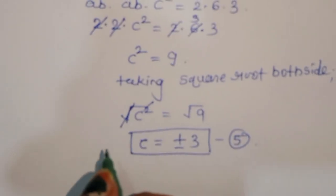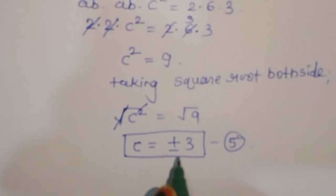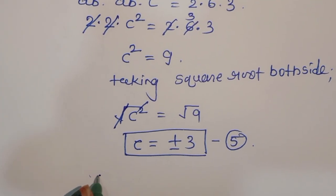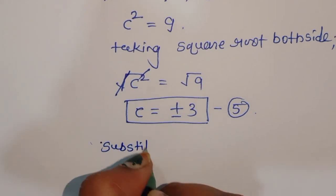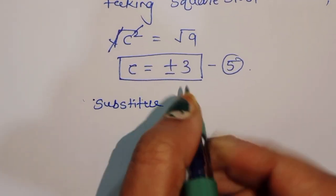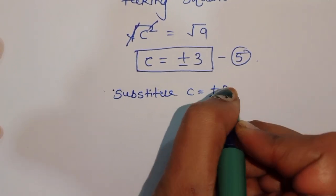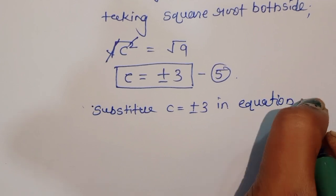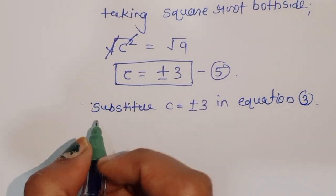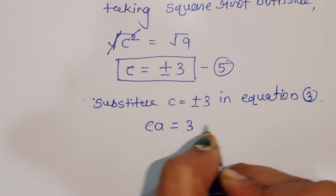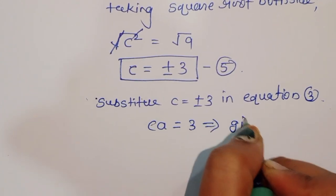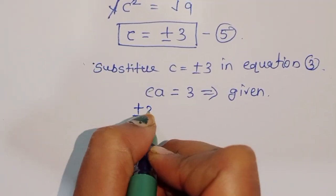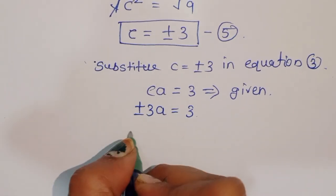Now we can substitute c equals plus or minus 3 into equation 3. Equation 3 states ca is equal to 3. Substituting c equals plus or minus 3: plus or minus 3 times a is equal to 3.